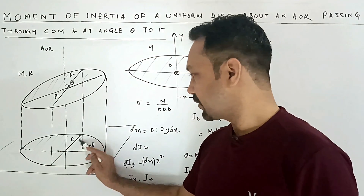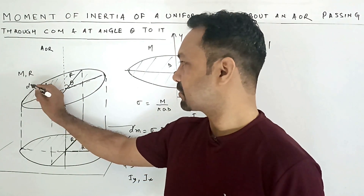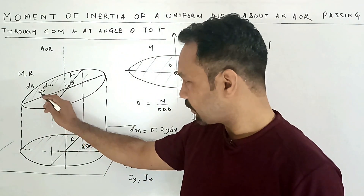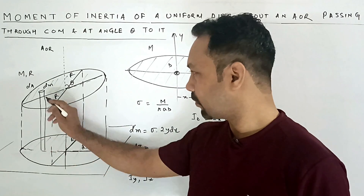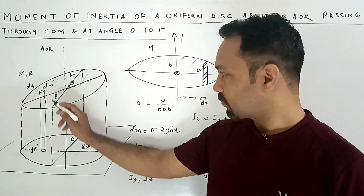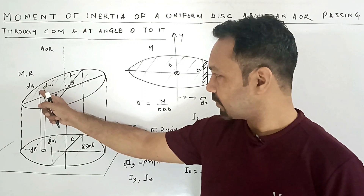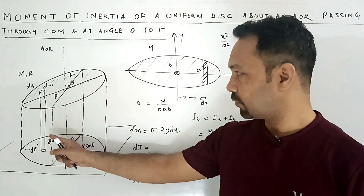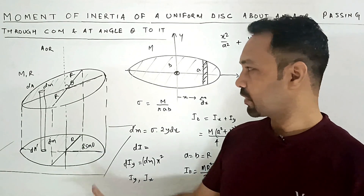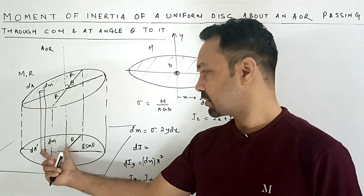Now suppose I take a small area element dA on the circular disk with mass dm, and project it onto the corresponding area dA' on the elliptical disk. The distance of this mass dm from the rotation axis is the same in both cases, because the moment of inertia depends on that distance. So the moment of inertia contribution is dm·R² in both cases — they are identical.